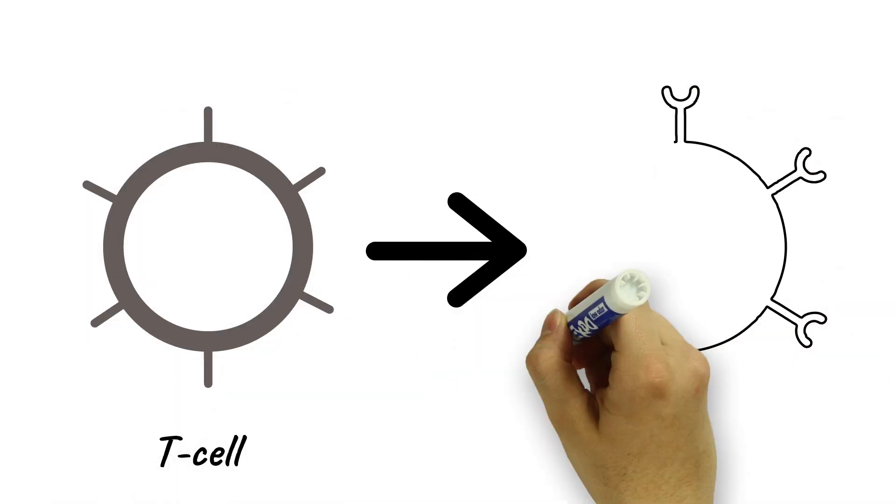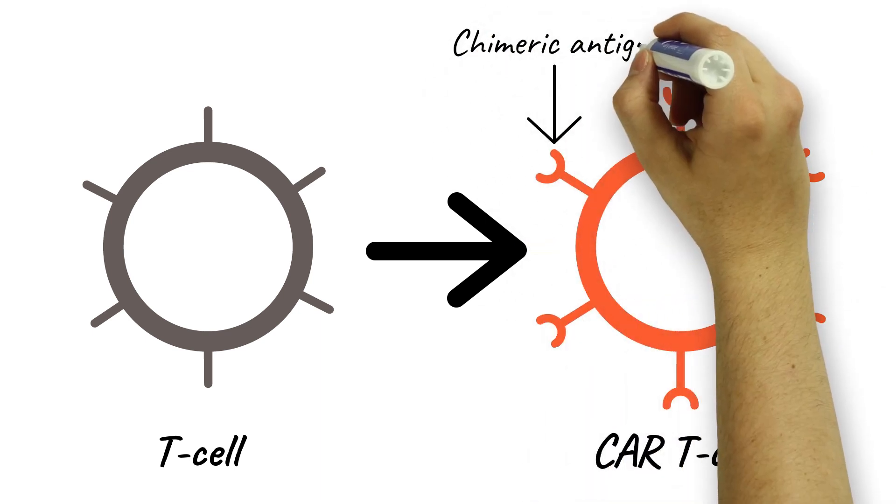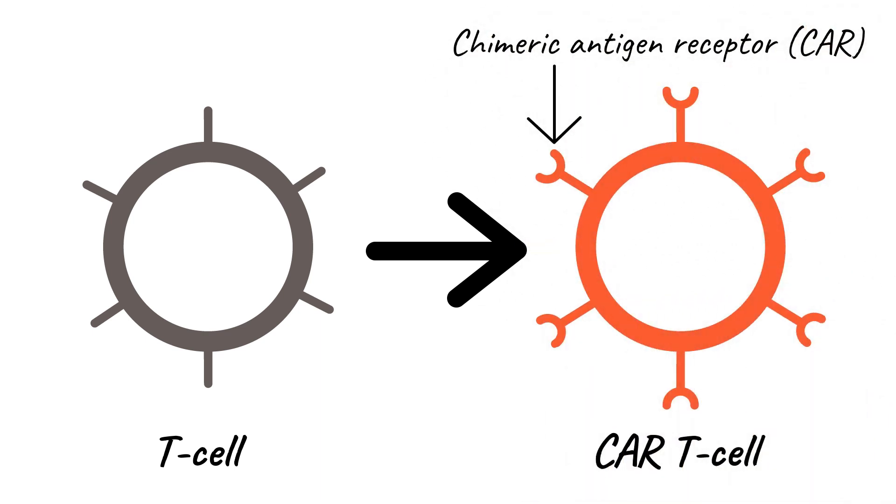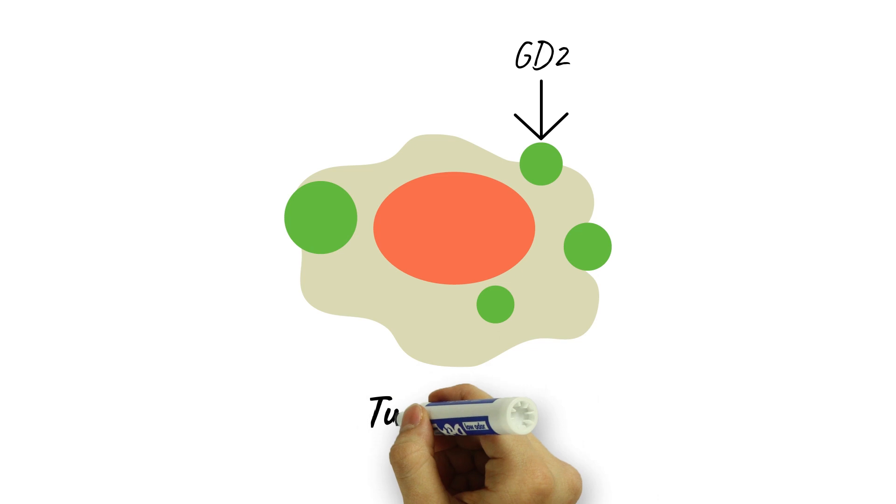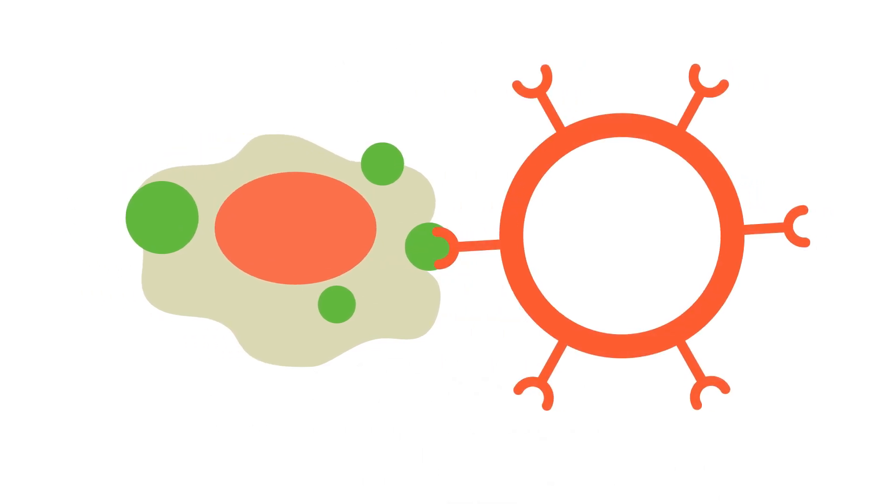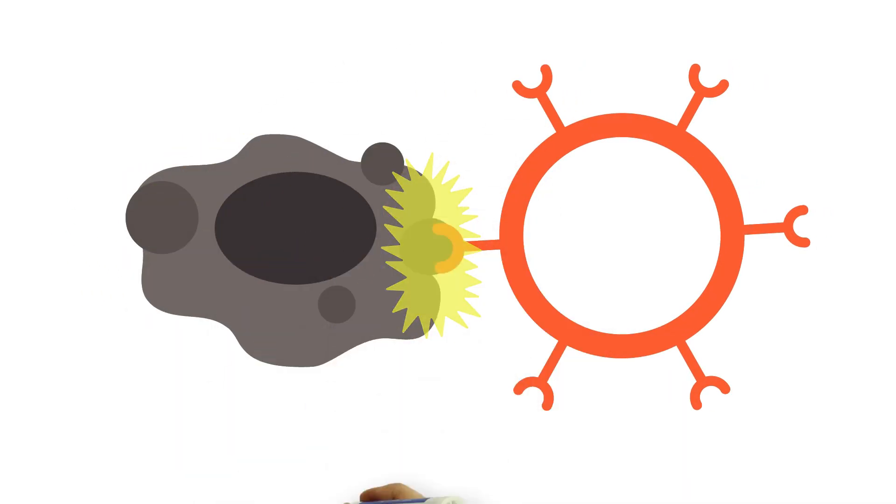GD2 CAR T-cell immunotherapy uses engineered T-cells to fight cancer. These T-cells have chimeric antigen receptor molecules, also known as CARs, added to their cell surface. The GD2 CAR binds to GD2 molecules on the surface of neuroblastoma cells and triggers the T-cell to kill the cancer cells.